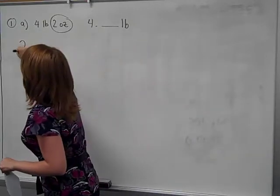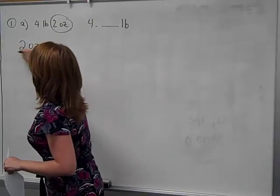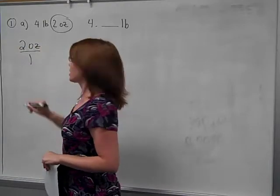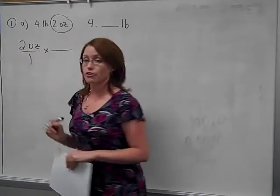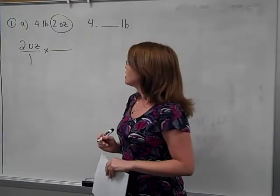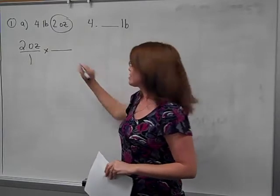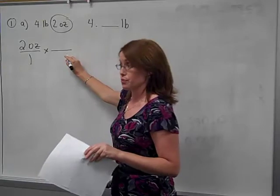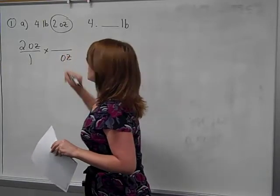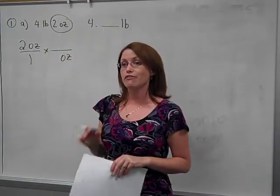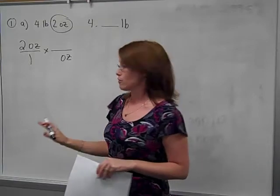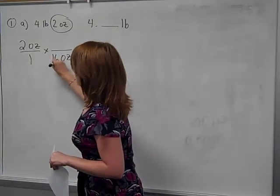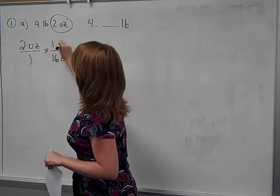Dimensional Analysis says I can do two ounces over one, multiply it by a unit fraction. Now what has to go in the denominator here? Ounces. How many ounces? Right. Is there a conversion straight from ounces to pounds? Yes. Sixteen ounces. Sixteen ounces is the same thing as one pound.